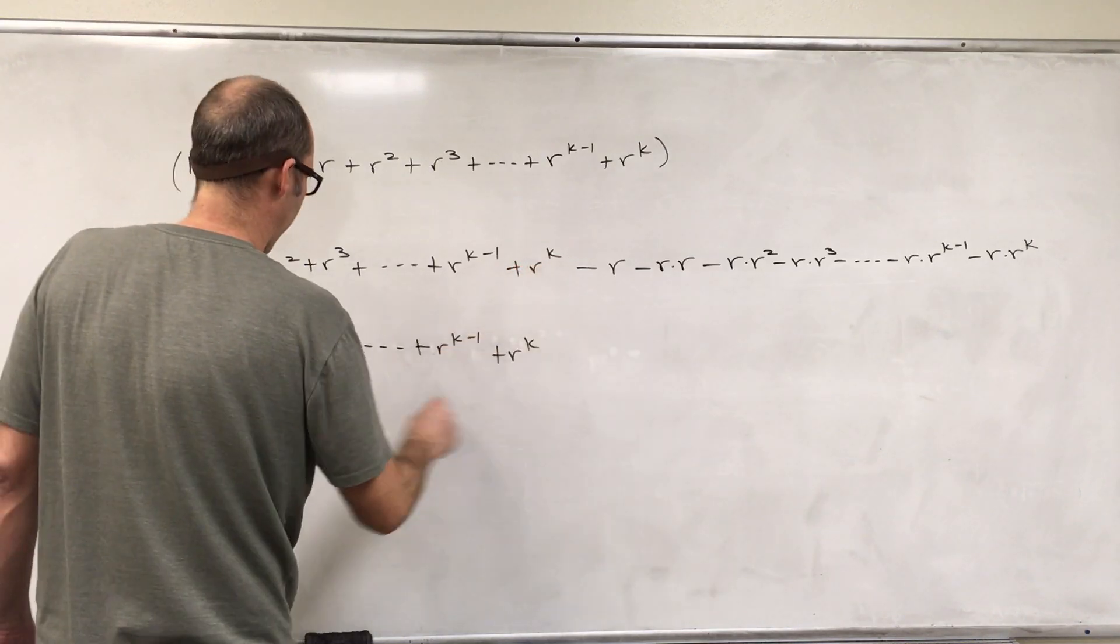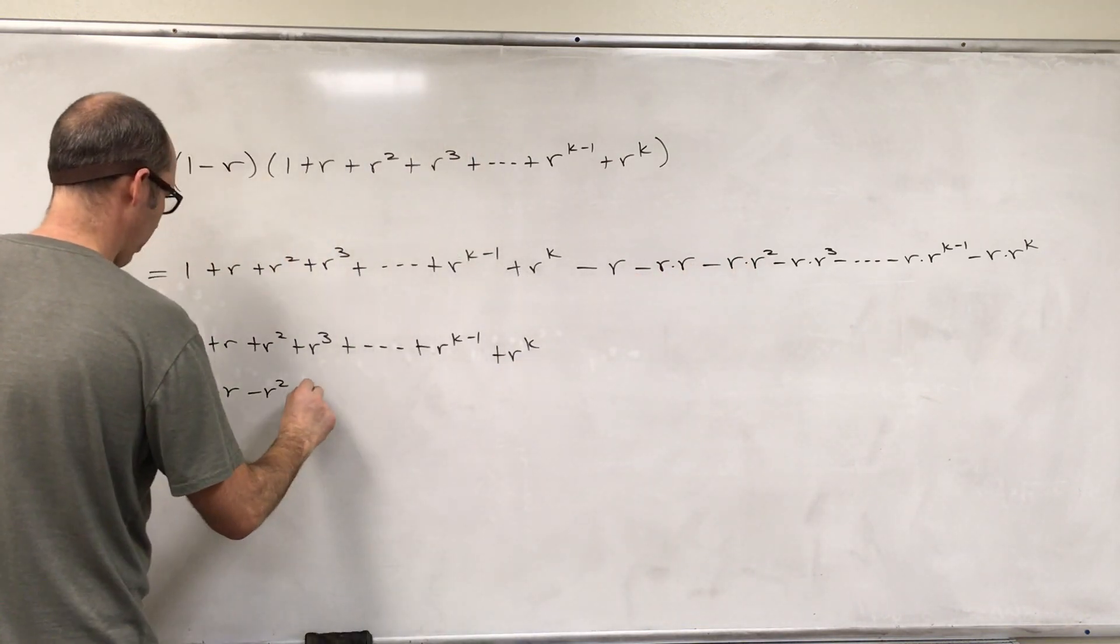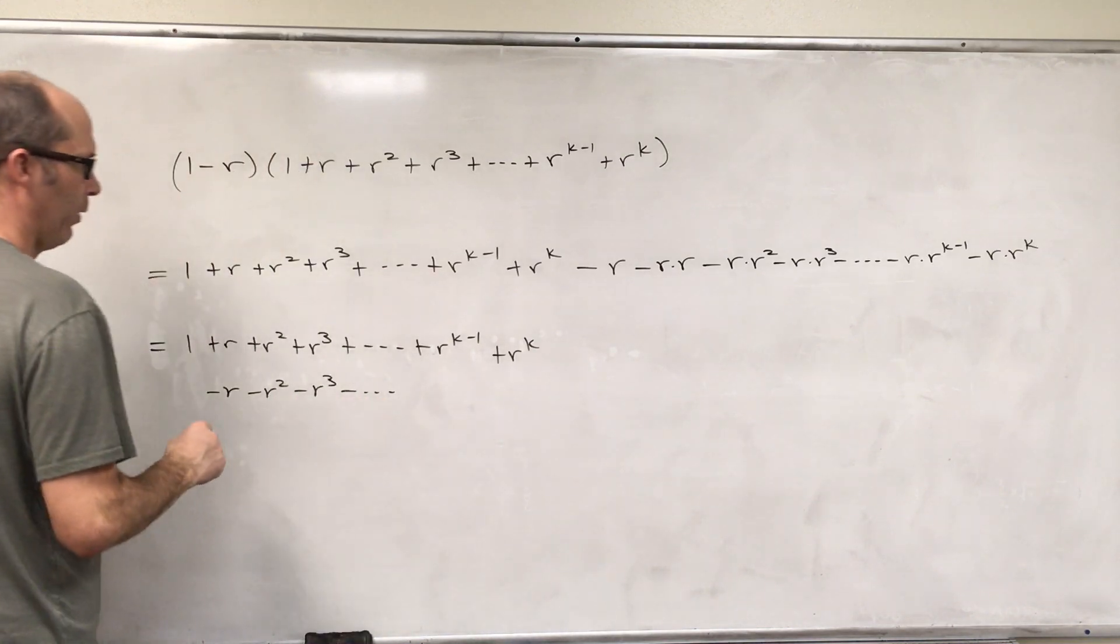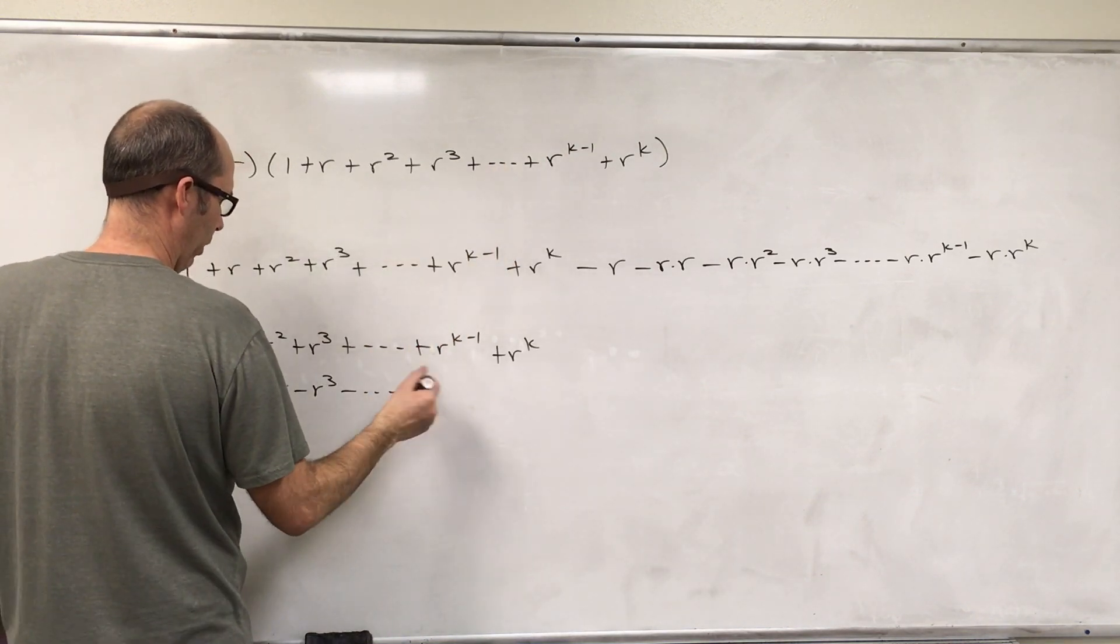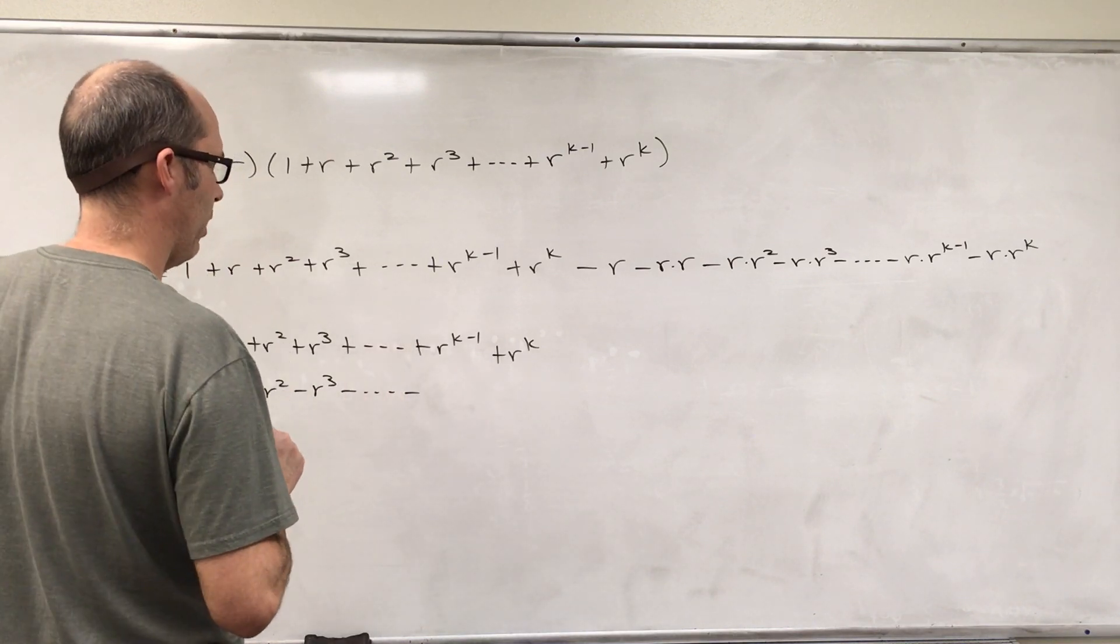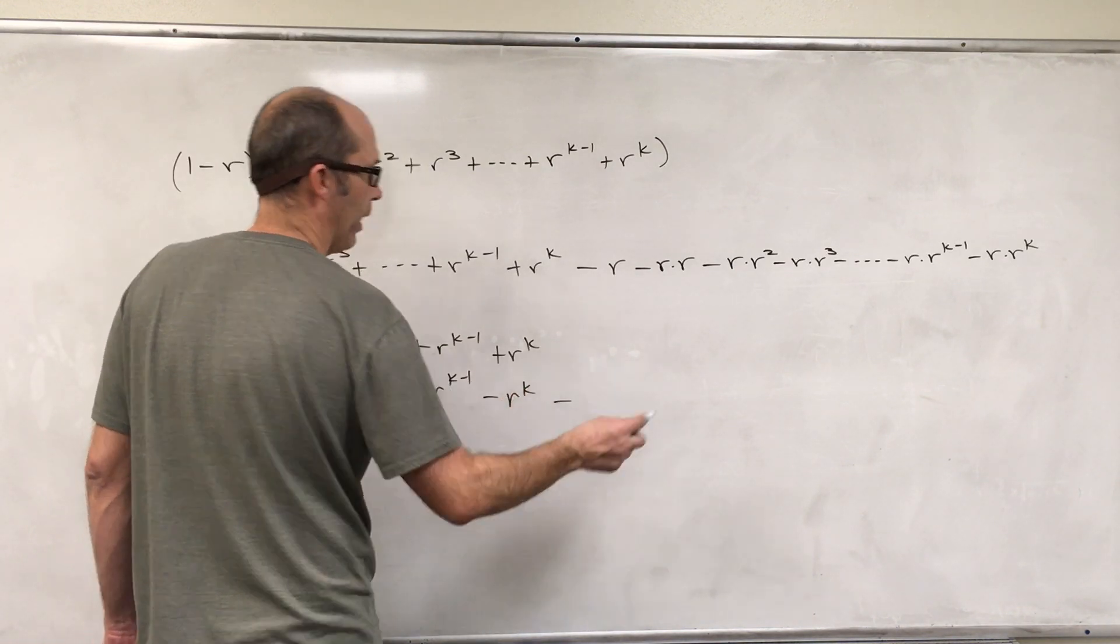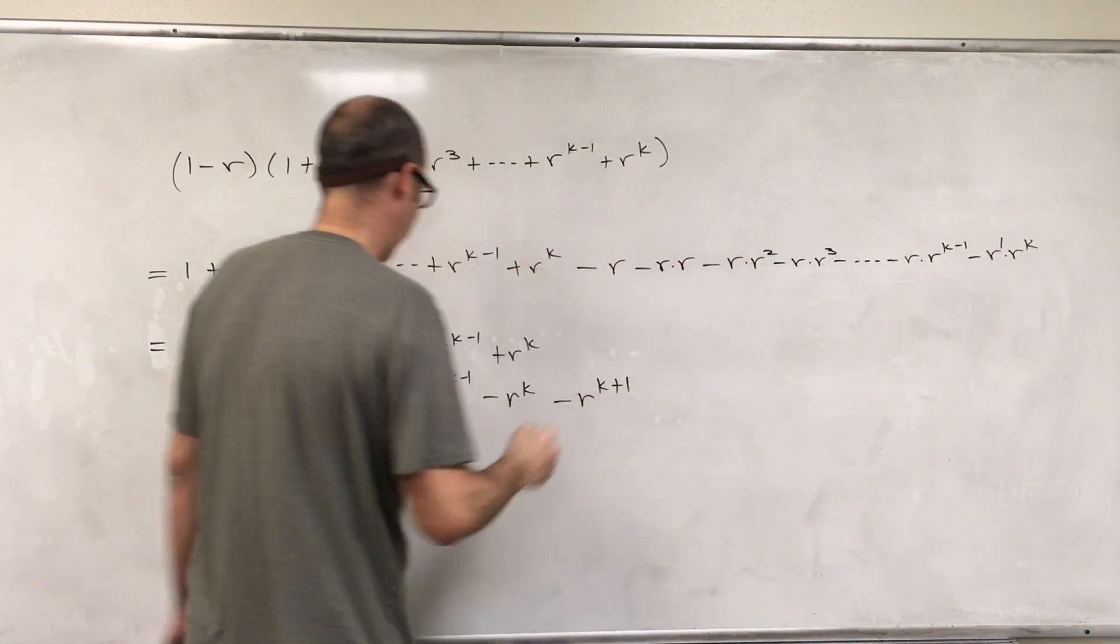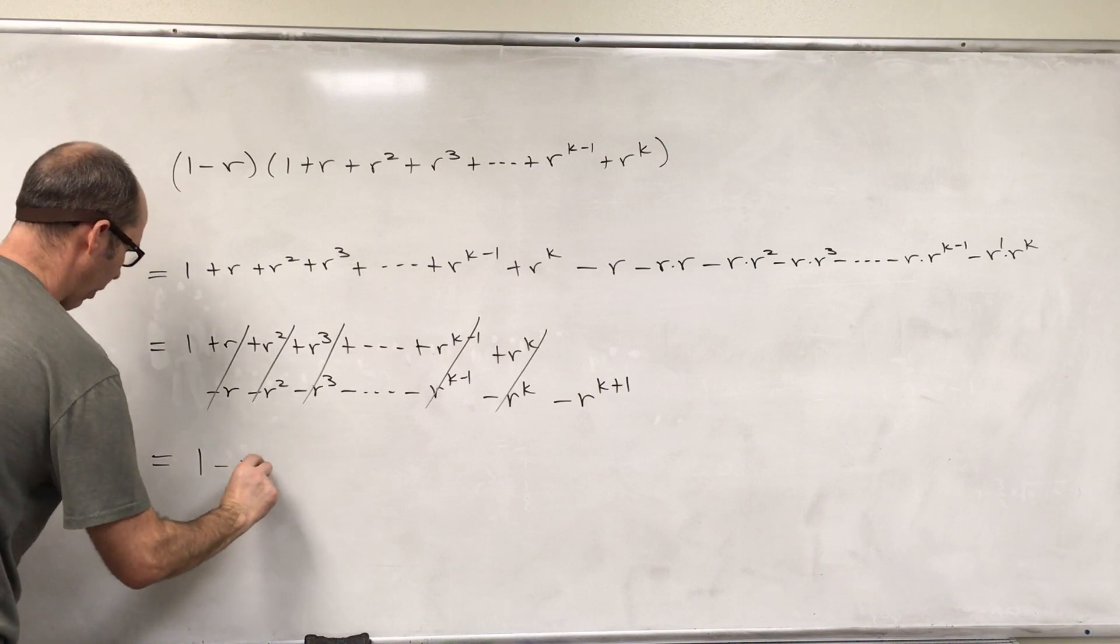So you got 1 plus R plus R squared plus R cubed plus R to the K minus 1 plus R to the K. And I'm going to move these things down here. So you got minus R, notice this is minus R squared, this is minus R cubed. Notice that all these will cancel along here, and we're left with 1 minus R to the K plus 1.